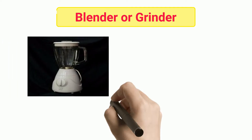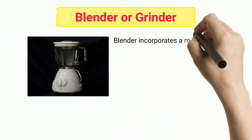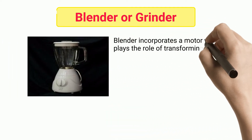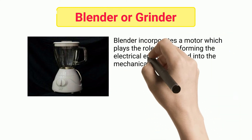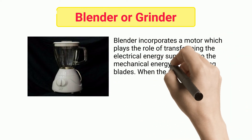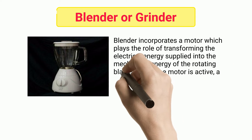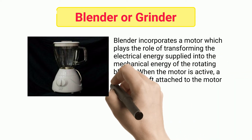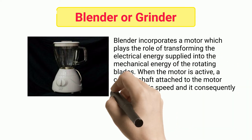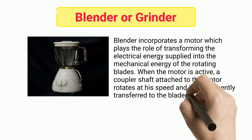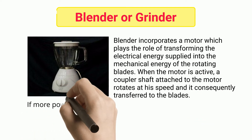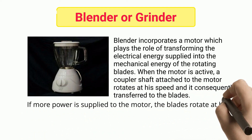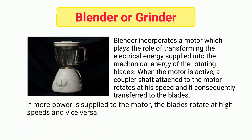Blender or Grinder. A blender incorporates a motor which plays the role of transforming the electrical energy supplied into the mechanical energy of the rotating blades. When the motor is active, a coupler shaft attached to the motor rotates at its speed and this is consequently transferred to the blades. If more power is supplied to the motor, the blades rotate at high speeds and vice versa.